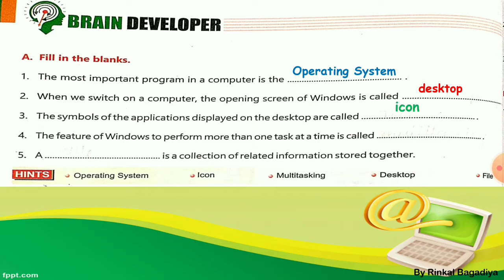Number 4: The feature of Windows to perform more than one task at a time is called dash. When we perform more than one task it is called multitasking. Write in the fourth blank: M-U-L-T-I-T-A-S-K-I-N-G, multitasking. Number 5: A dash is a collection of related information stored together — the answer is file. F-I-L-E. Children, you must write with good handwriting.